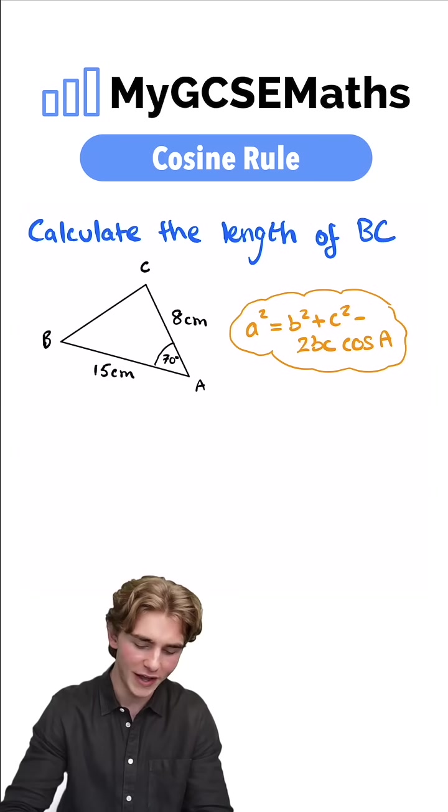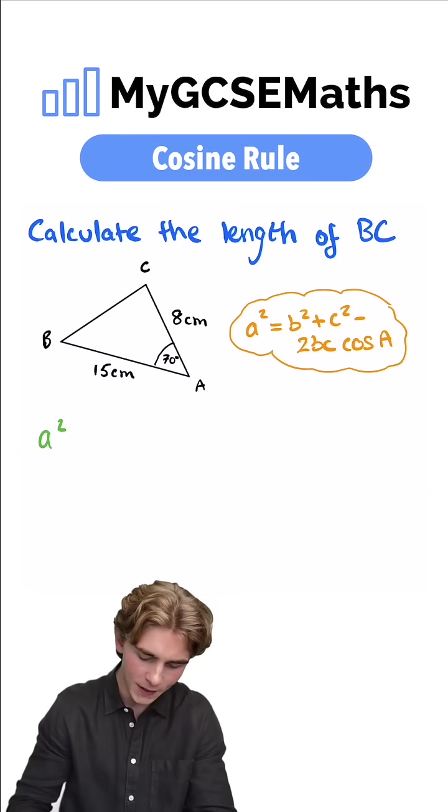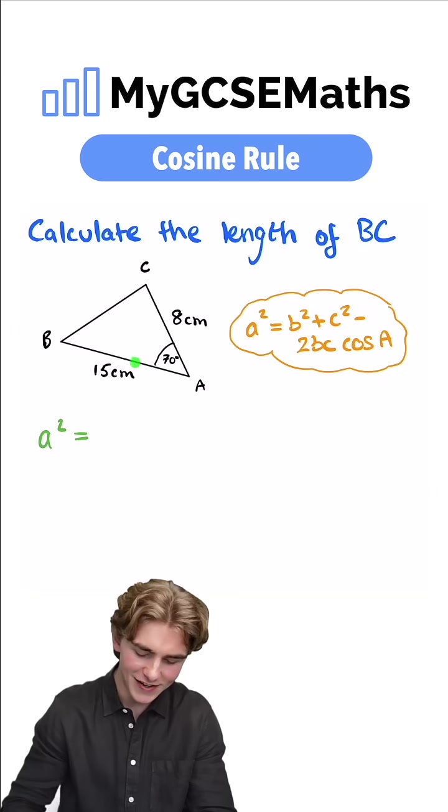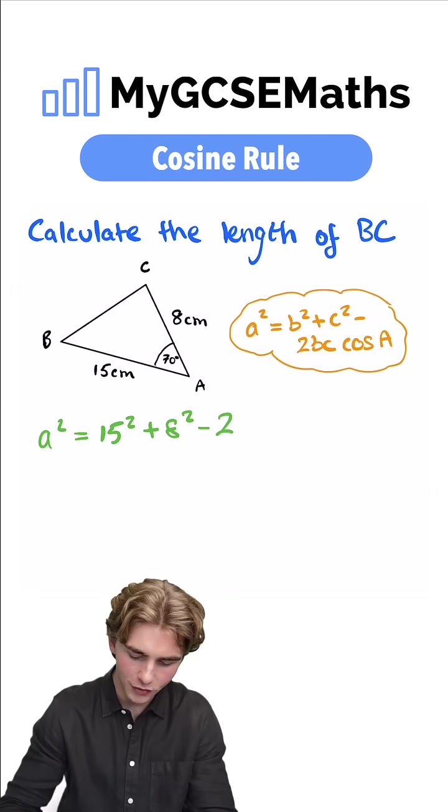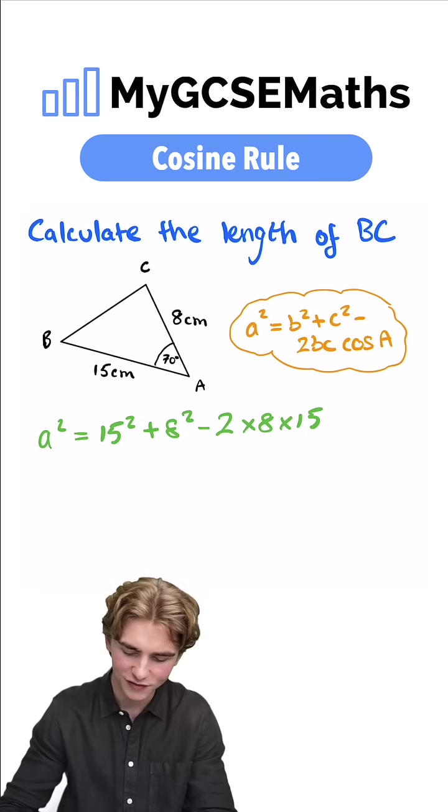So we're going to plug in our values. We have a squared equals b and c are going to be these two side lengths here. So we have 15 squared plus 8 squared minus 2 times by b which is 8 times by c which is 15 times by cos a which is going to be cos of our angle 70.